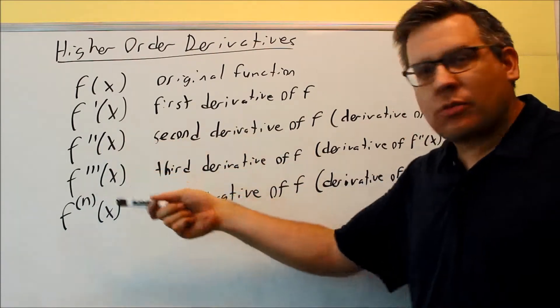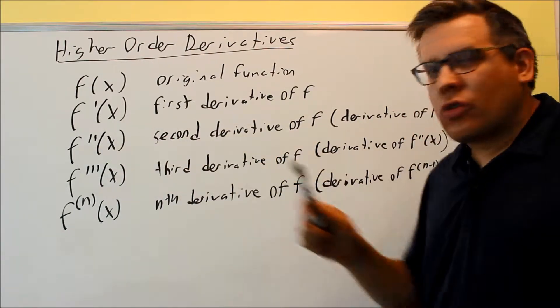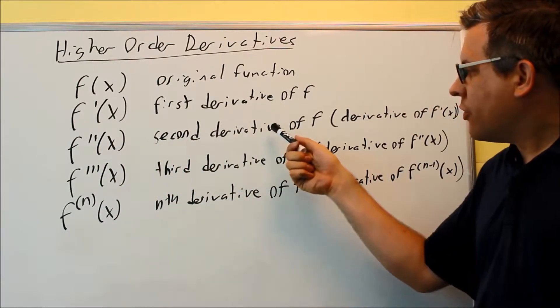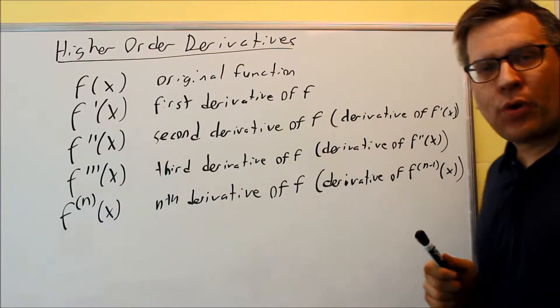But then you have higher derivatives. So this is the second derivative. So if it says find the second derivative, what we're going to do is we're going to take the derivative of f prime.